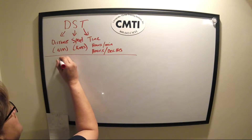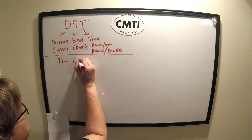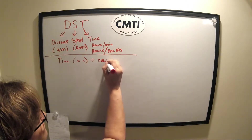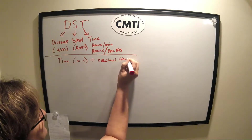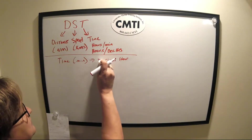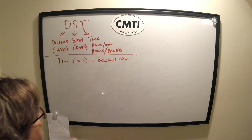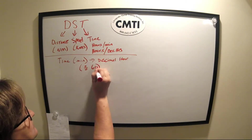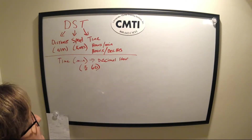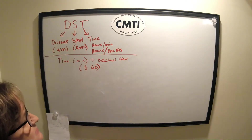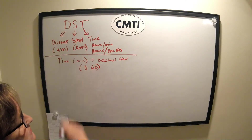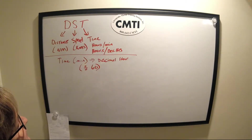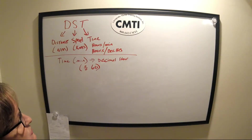When converting minutes of time into a decimal hour, we take the minutes and divide by 60 — because there are 60 minutes in each hour. This breaks time down into parts of an hour in decimal format, which the calculator can recognize as time rather than base-100 units.